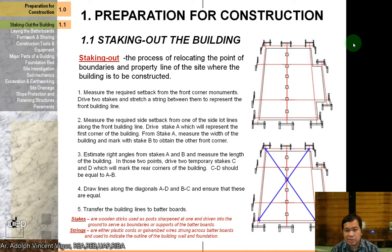Stakes are wooden stakes sharpened at one end, driven into the ground to serve as boundaries or support for the batter boards. Strings are either plastic cords or galvanized wires strung across batter boards, used to indicate the outline of the building wall and foundation.